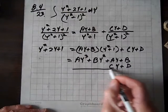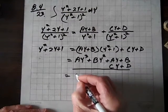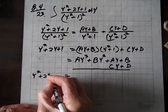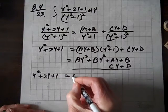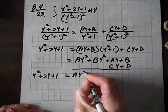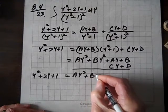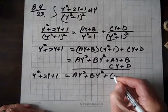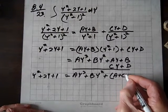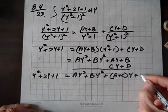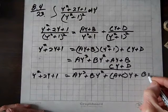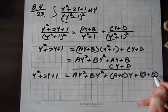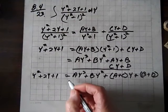And what we get here is that this equals, and by the way I'm going to write this down, y squared plus 2y plus 1 equals ay cubed plus by squared plus, in parentheses, a plus c y, plus b plus d. And I'm going to put parentheses around that just to indicate that's our constant, this is the coefficient on y, and so on.